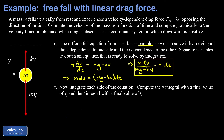Now we integrate both sides from the initial state to the final state. On the left I integrate m dv over mg minus kv, and on the right I integrate dt. The initial velocity is zero and the initial time is zero. For the upper limits, I can't use v or t as both the integration variable and the limit, so I'll call them v_final and t_final.